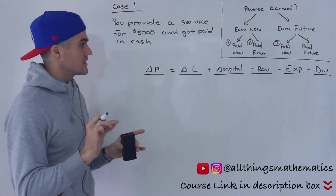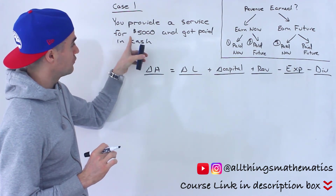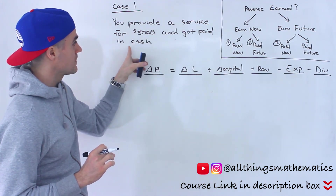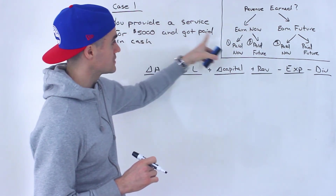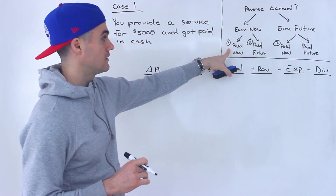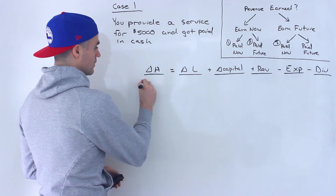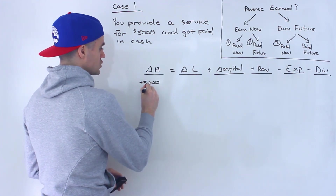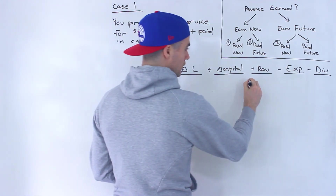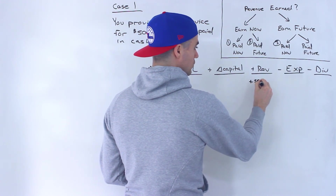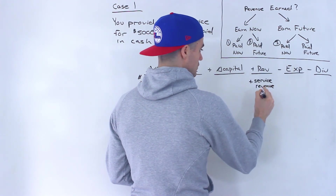Let's go through specific examples for each of the three cases. Starting with case one: let's say you provide a service for $5,000 and get paid in cash. Remember, in case one you earn the revenue now — you provided the service — and you get paid now in this period. So cash goes up by $5,000, and you recognize that revenue because you provided that service.